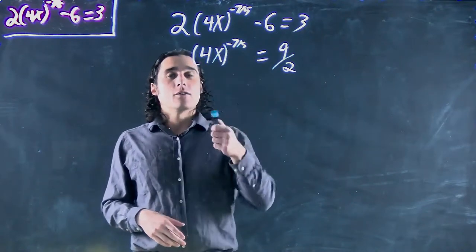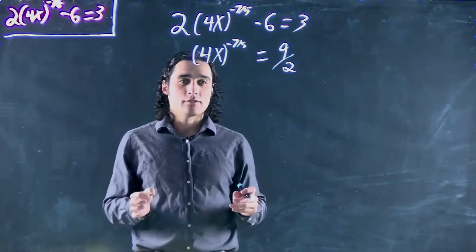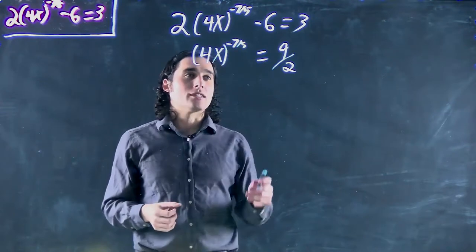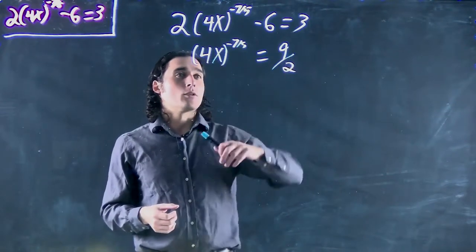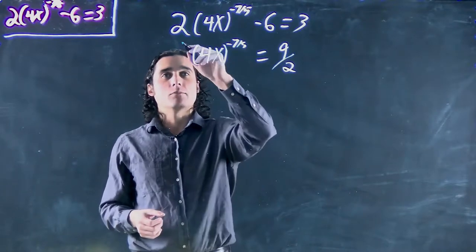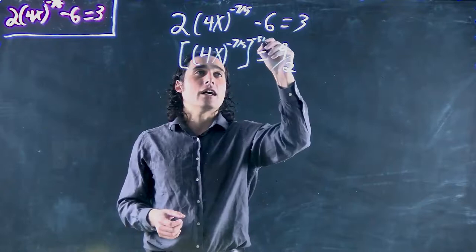Now what we're assuming by the way in this problem is that x is positive. Remember if x is negative we can't take this power, but we're assuming x is positive and so we're now going to cancel out this power by putting both sides to the inverse or negative 5 over 7.